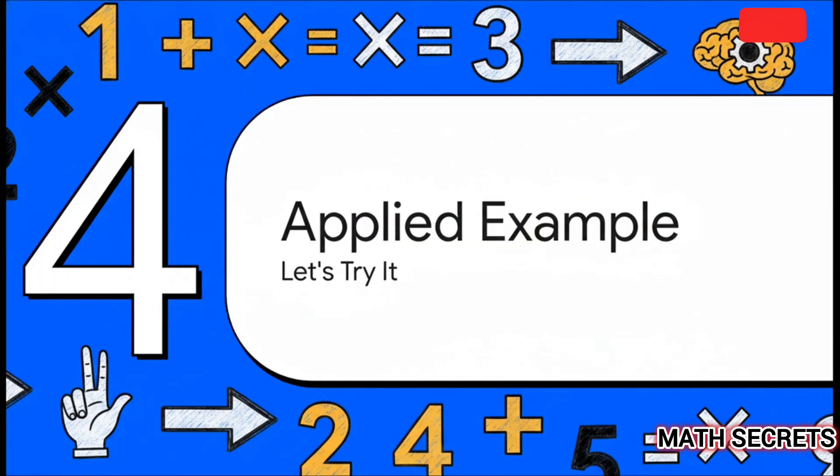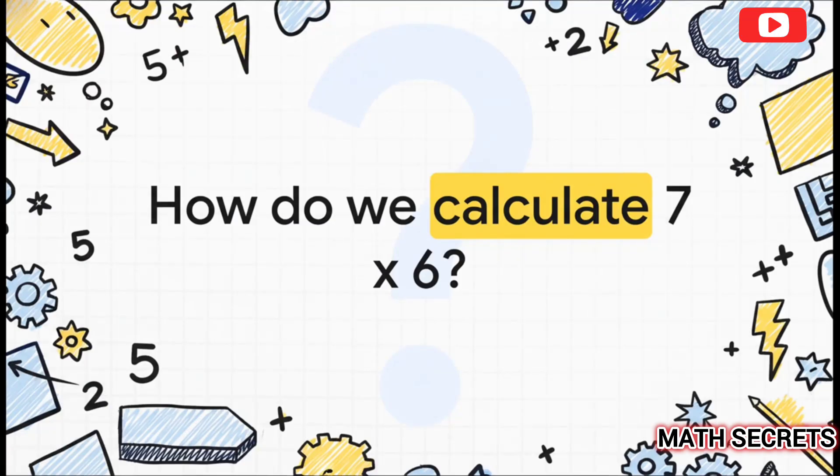Right, enough theory. Talk is cheap, right? The best way to see how powerful this is is to actually put it into practice. So let's do a quick example together. Let's use a classic problem straight from the seven times table. Seven times six. Maybe you have it memorized, maybe you don't. But let's just pretend for a second that your mind has gone completely blank and you need to figure it out fast.